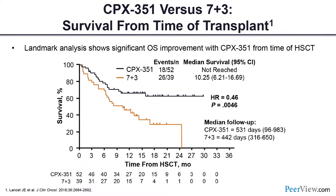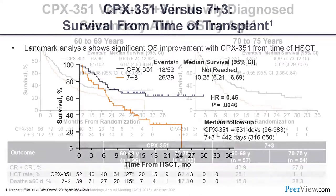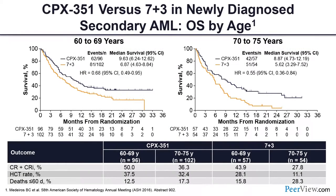An important clinical question: if a patient got 3+7 plus midostaurin in 2016, went to transplant, relapsed in 2018, can I just give them gilteritinib or quizartinib? No — you must recheck FLT3 at relapse. Data shows that in about 40% of patients who relapsed after midostaurin, FLT3 became non-detectable. If FLT3 is below 3 to 5%, it is likely no longer the driver. Conversely, 10 to 15% of patients who were FLT3-negative at baseline acquired FLT3 at relapse — so you must test FLT3 at every relapse before starting a FLT3 inhibitor. FLT3 is a more fluctuant clone; IDH is more stable.